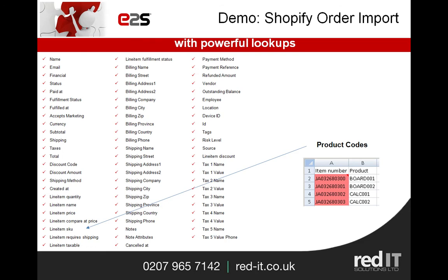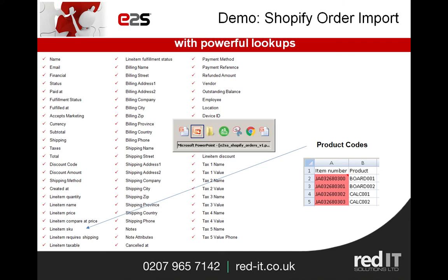So let's have a look at the Shopify order in particular. Shopify provides various different columns on their exports and some of these columns may require lookups. For example, the line item SKU might not match the product codes in Sage. What our import allows us to do is set up very simple Excel spreadsheets which can do the lookup on the fly on the way in. So let's have a look at this in action.